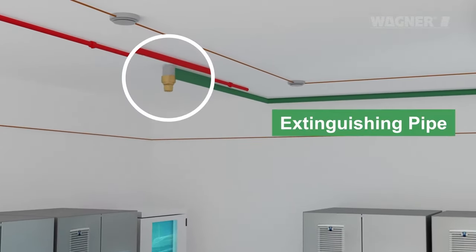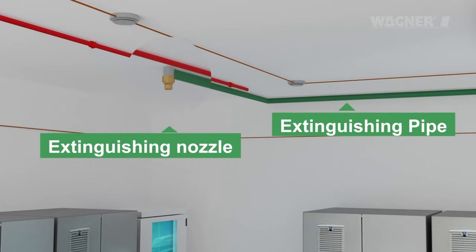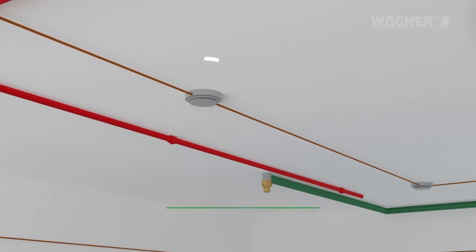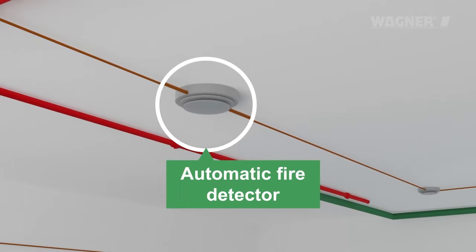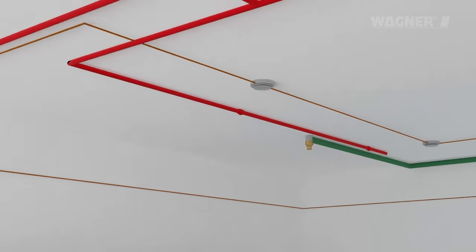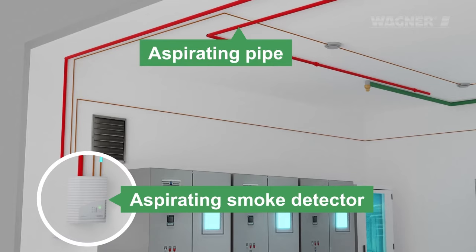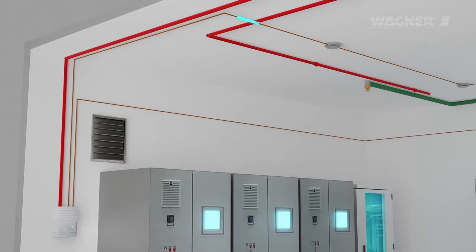The extinguishing pipes and nozzles. The components of the fire detection and alarm system are located in the protected area of the system and are connected to the electrical control device via a loop line.